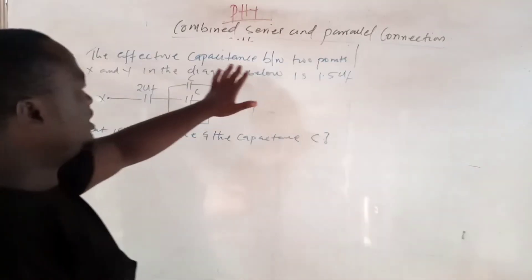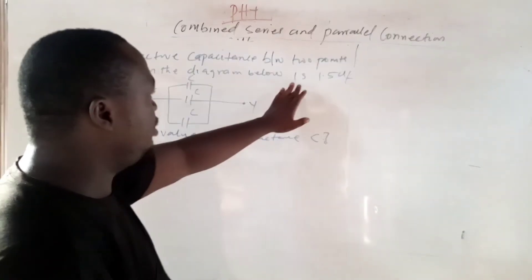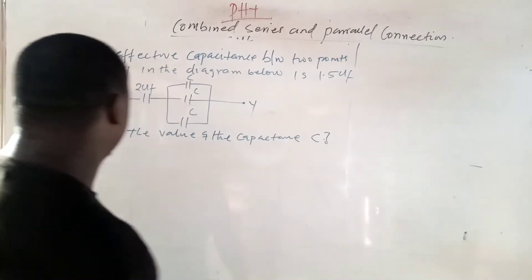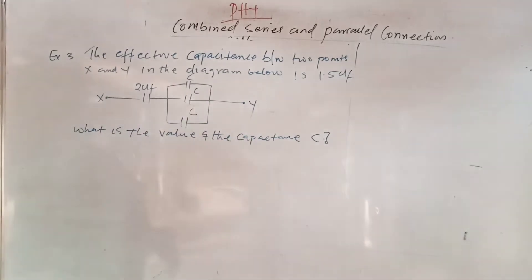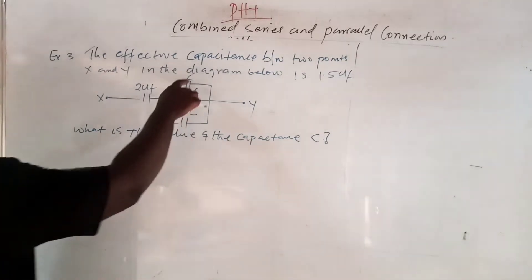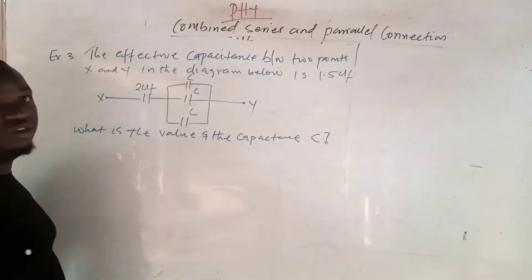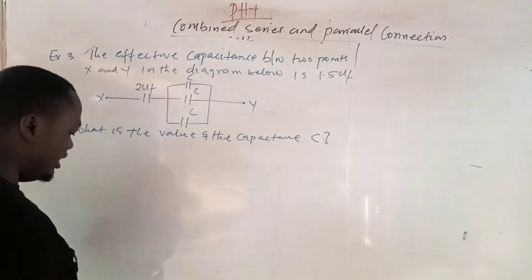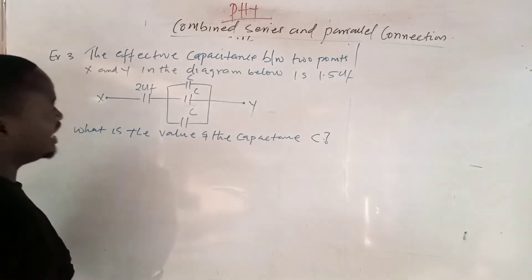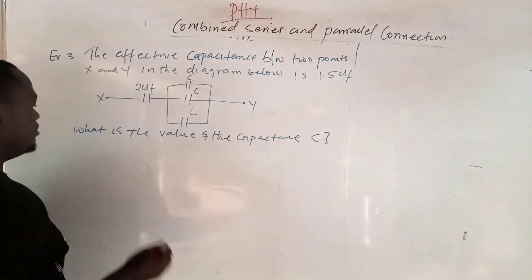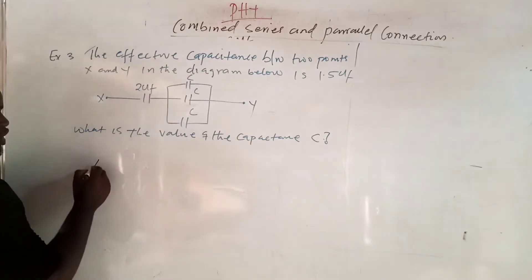The effective capacitance between points X and Y in the diagram is 1.5 microfarad. What is the value of capacitance C? They gave us C with no value — they want us to calculate it. As usual, they are in parallel, so I am going to redraw the circuit.